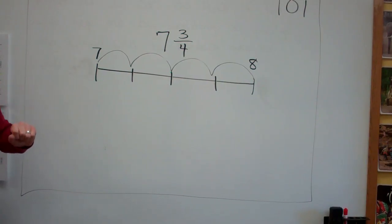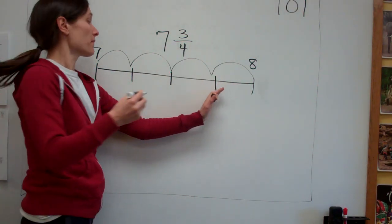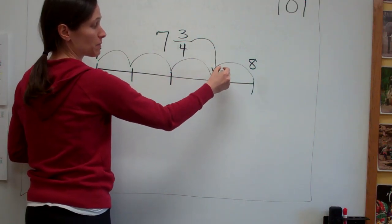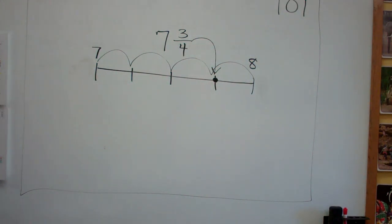And where would seven and three-fourths be? Can I throw? On which one? Would it be on the last one? One, two, three. Very good. Does everybody see that seven and three-fourths would be in this spot right here? Yeah, that's what I'm like, one-fourth away from the fish.